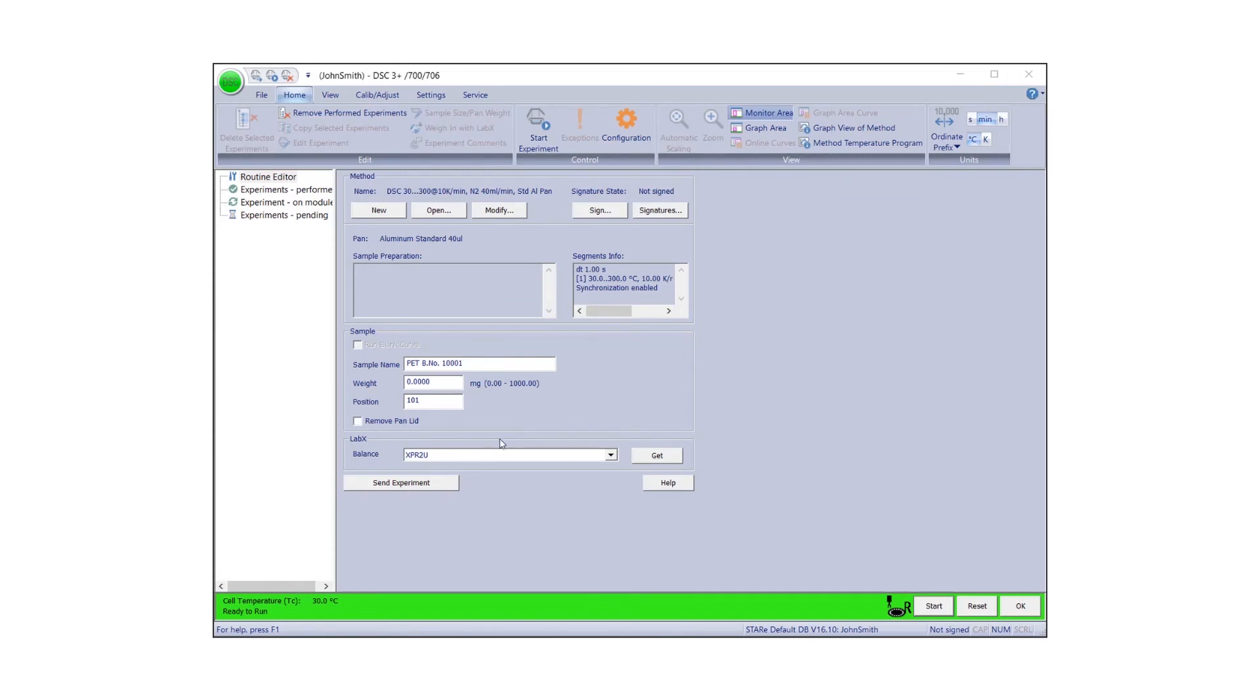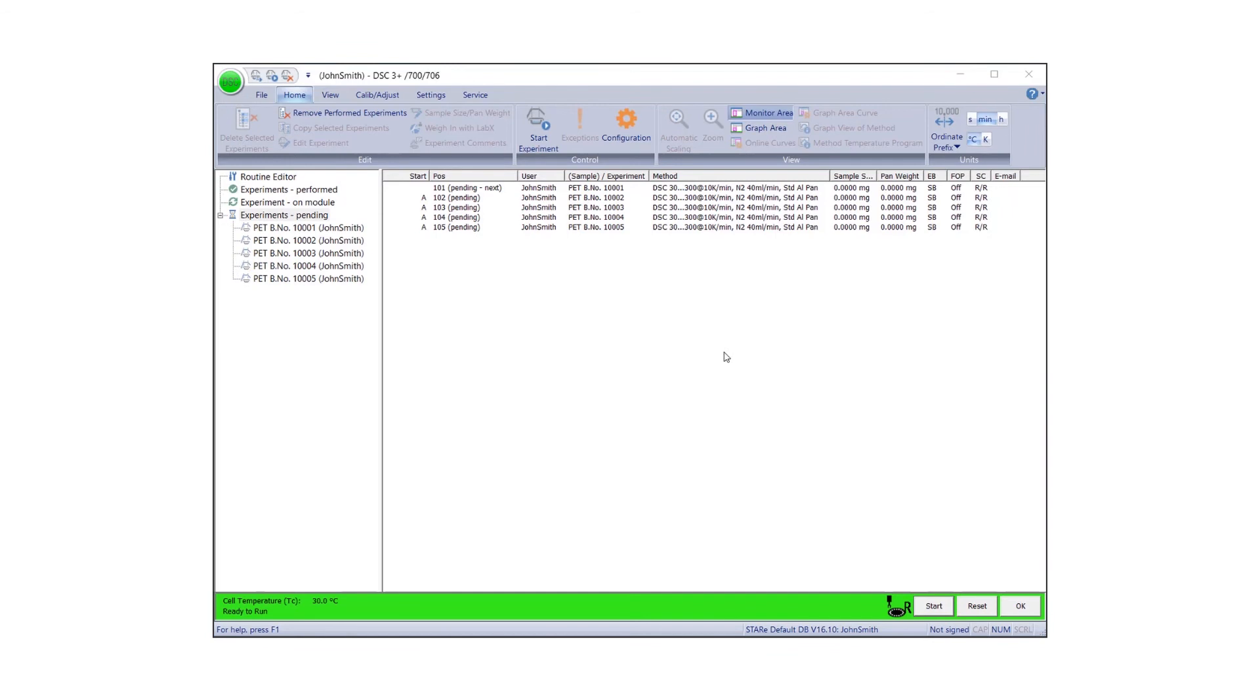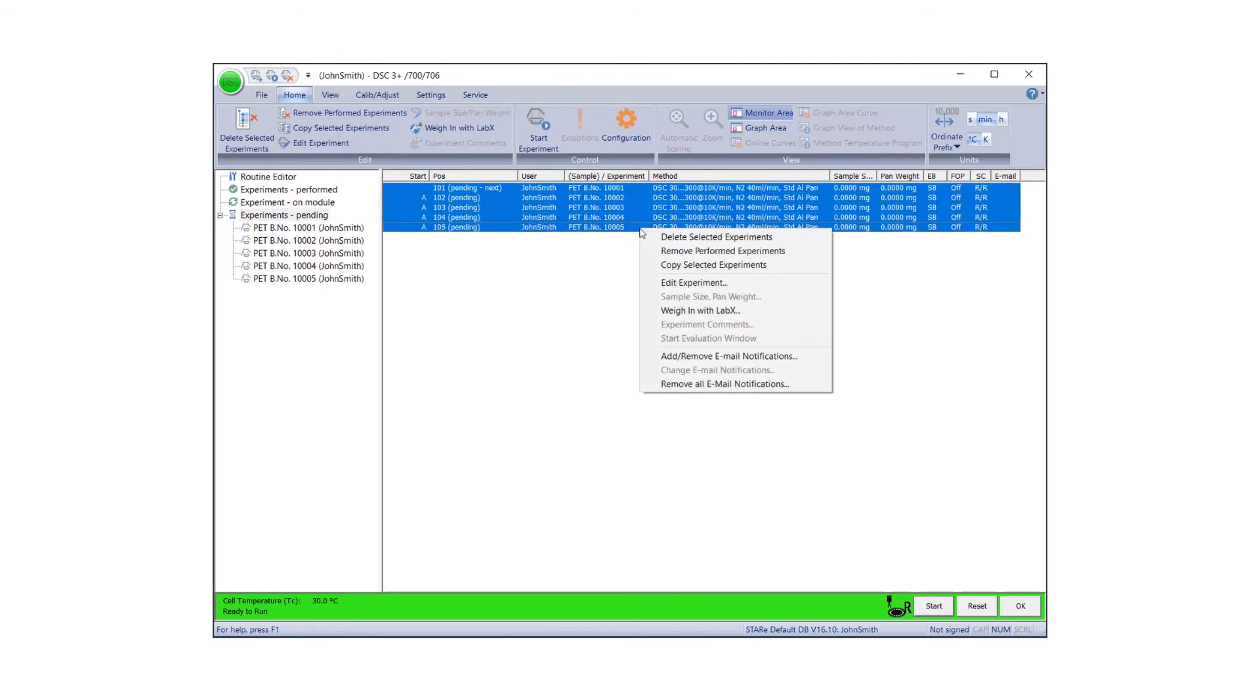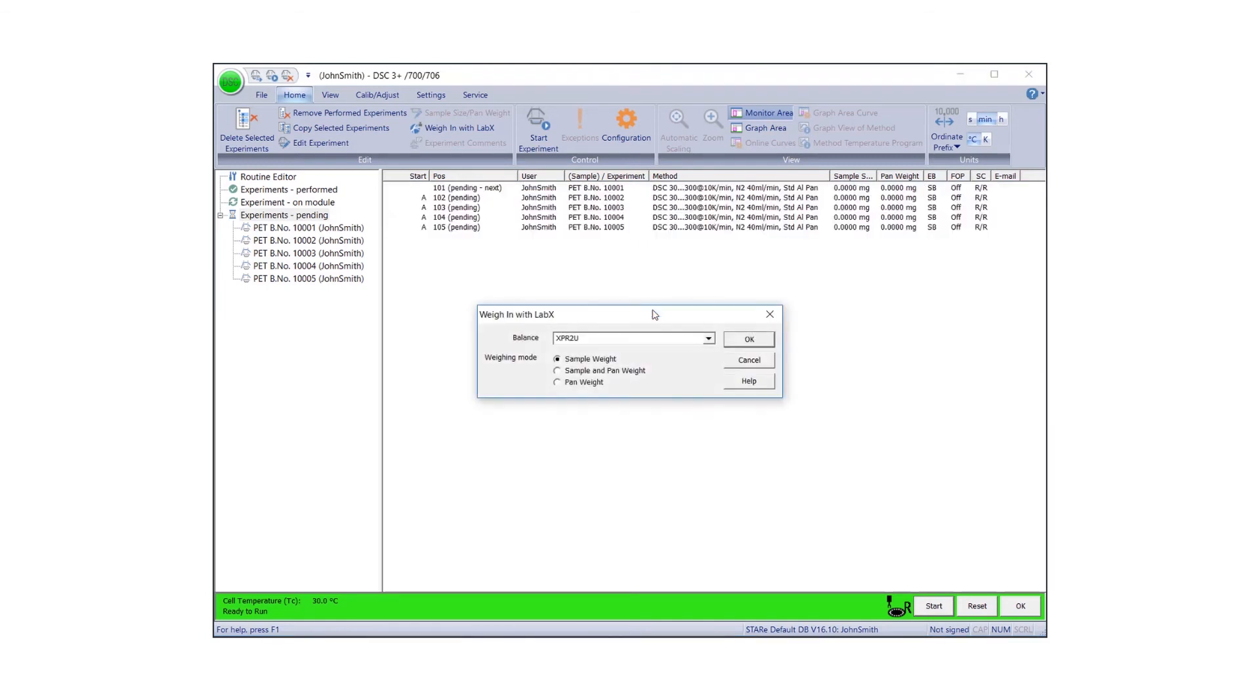In the Routine or Experiment Editor, send experiments without weight values to the module. The experiments can be viewed in the experiment buffer. Select several experiments, right-click, and choose Weigh In with LabX from the drop-down menu. A dialog box appears. Select your preferred balance and weighing mode, then click OK to transfer the weigh-in tasks to the balance.